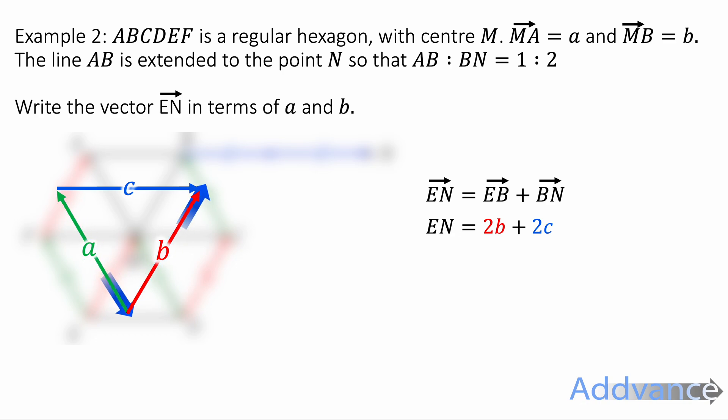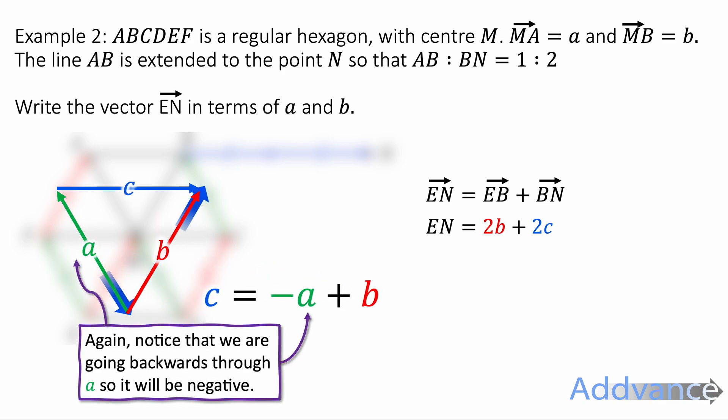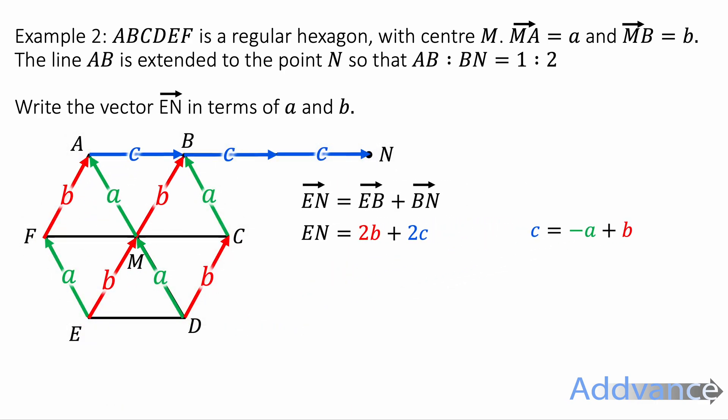c is going backwards a and forwards b. And so c can be written in terms of a and b like this: c equals minus a plus b. We can substitute that into the expression. So 2b plus 2 times minus a plus b, which is 2b minus 2a plus 2b, which simplifies to 4b minus 2a. And again, we found the vector EN in terms of a and b. And we are finished.